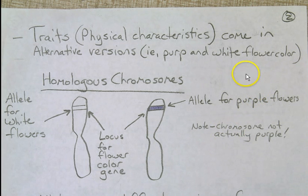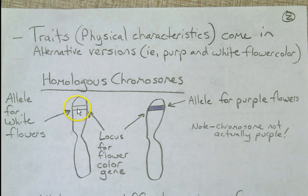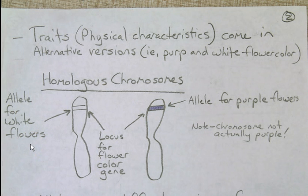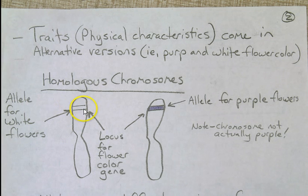Traits are physical characteristics that come in alternative versions — for example, purple and white flower color. Remember, you have homologous chromosomes: two of every chromosome, 23 pairs total. Located on the chromosome is a sequence of DNA called the gene. The different versions of a gene are called alleles. A locus is the location on a chromosome where a gene is found. For example, a plant could have one white flower allele on one chromosome and one purple flower allele on the homologous chromosome.